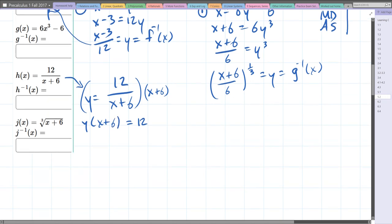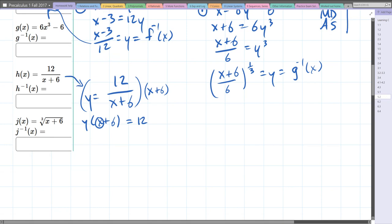From here, we want x by itself. We have a few options. One is to distribute y. Another option I like better is divide both sides by y, then subtract 6, giving us x = 12/y - 6.